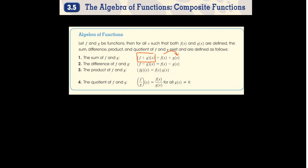We'll obviously do examples. Moving forward, for difference and product they're all exactly how you think they would be. f minus g of x is simply f of x minus g of x. f times g of x is f of x times g of x. For division, there's one added rule: g of x cannot equal zero, because if g of x is in the denominator, it cannot be zero — otherwise we have an undefined function.